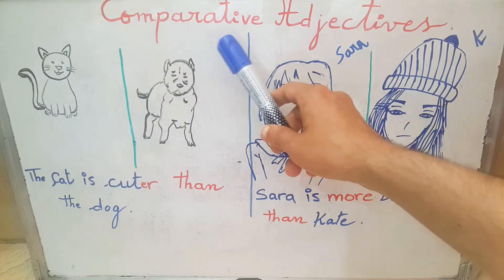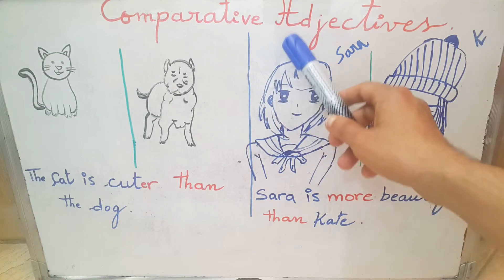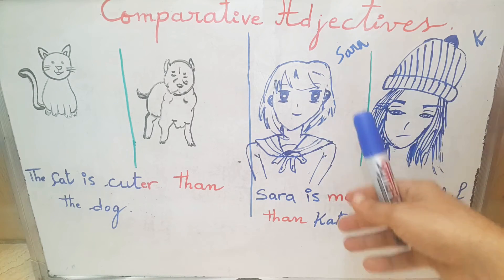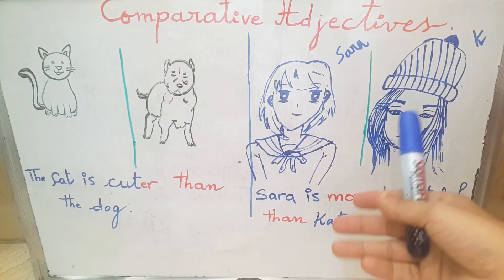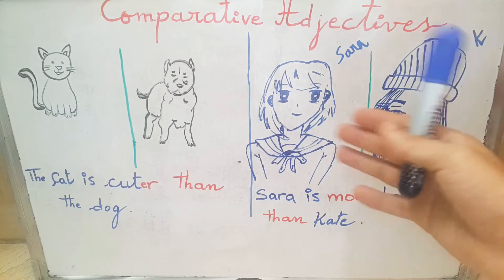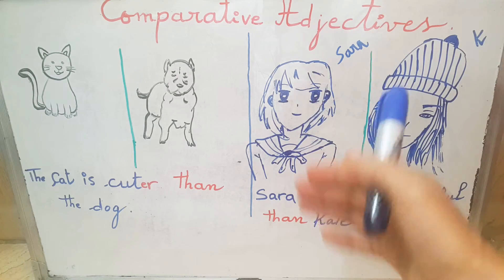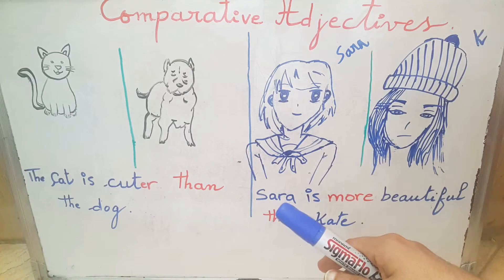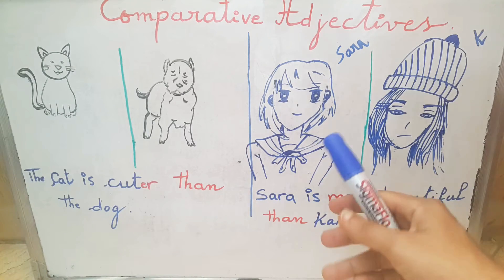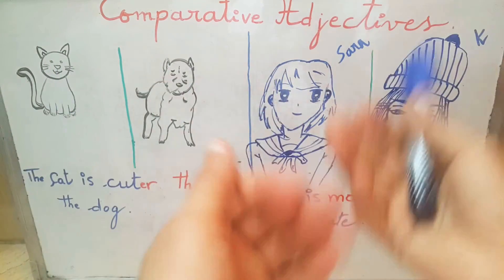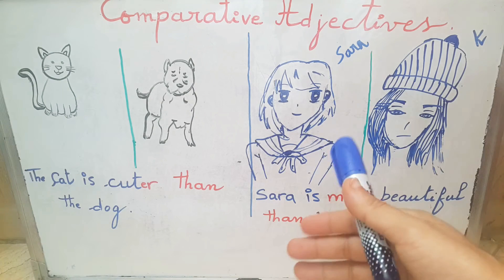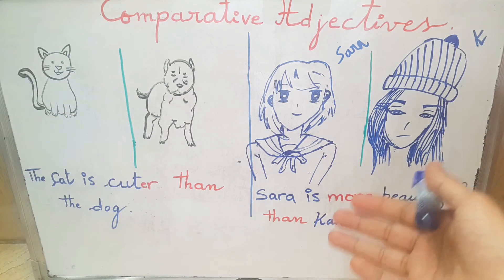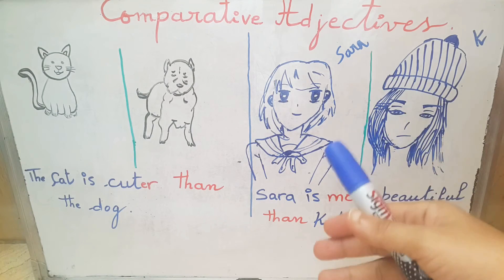Hello guys. Today we look at comparative adjectives. I have already made a video about adjectives, where I said that an adjective is a word that describes a noun. In this video I will explain how to use adjectives when we want to compare between two things, when we want to establish the difference between two people and two places.